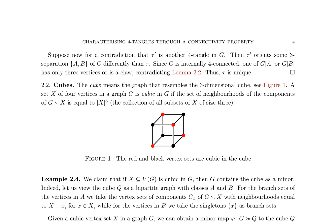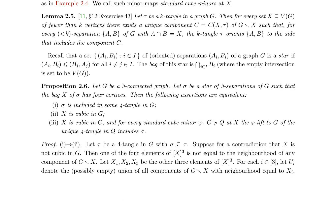A standard cube minor phi from G to Q at X is defined as a minor map from G to the cube Q, where the branch sets are constructed as described above. The authors cite a result from [11], Section 12 Exercise 43, stating that for any k-tangle tau in a graph G and every set X of fewer than k vertices, there exists a unique component C equals C(X, tau) of G-X.